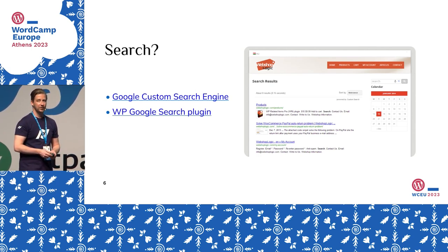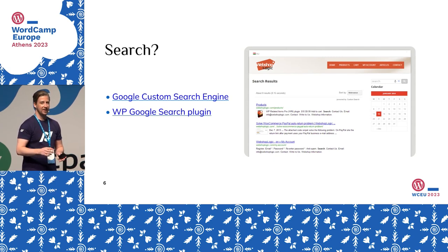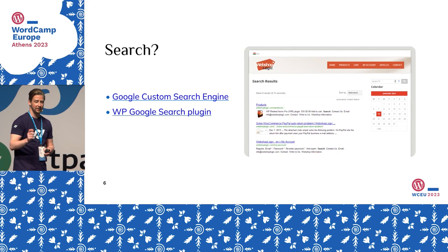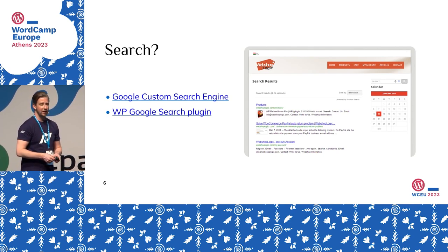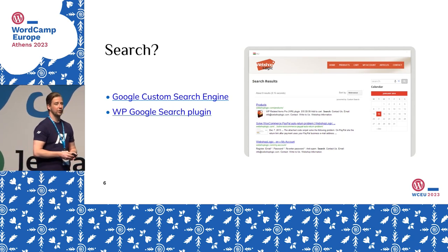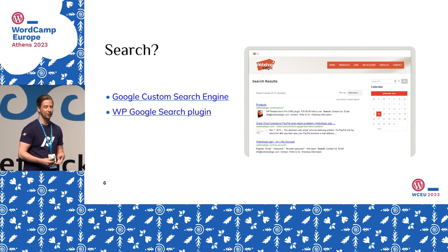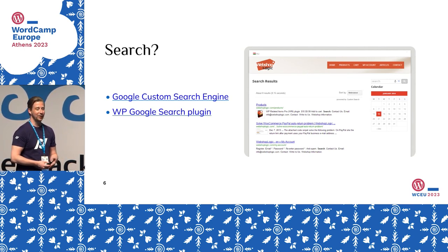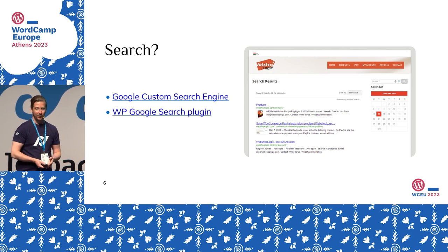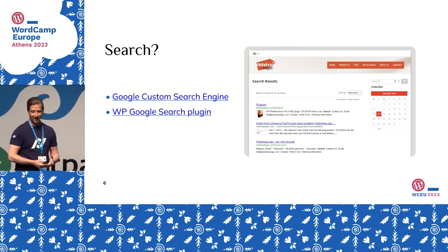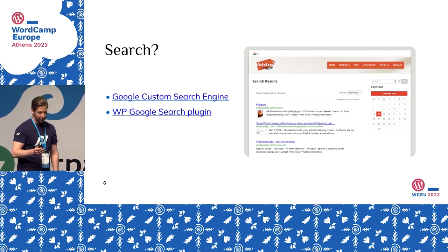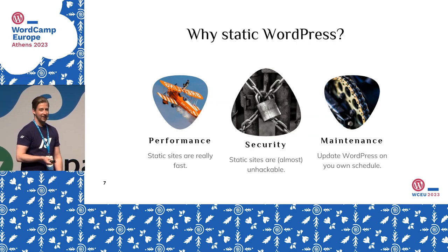The search box already comes with autosuggest, so once a user types something in, search results will pop up. If the user hits enter or clicks the search icon, it opens a pop-up containing search results from Google but limited to your own domain — which is important because you don't want your competitors appearing in your own search results. That's pretty much the second important dynamic feature covered.